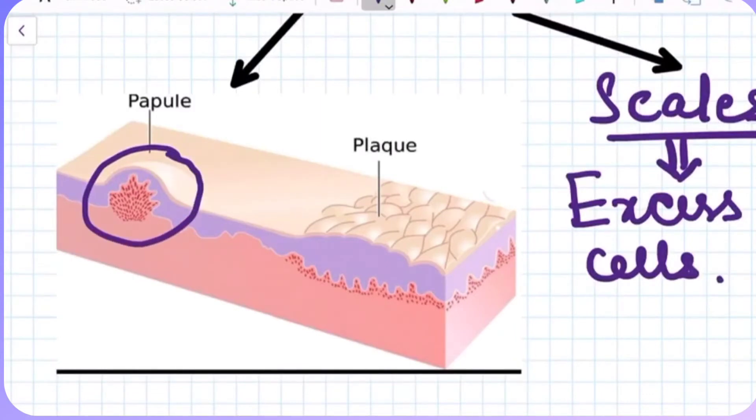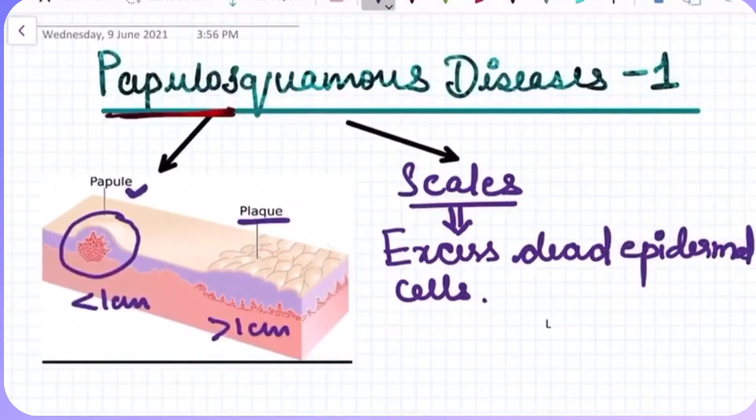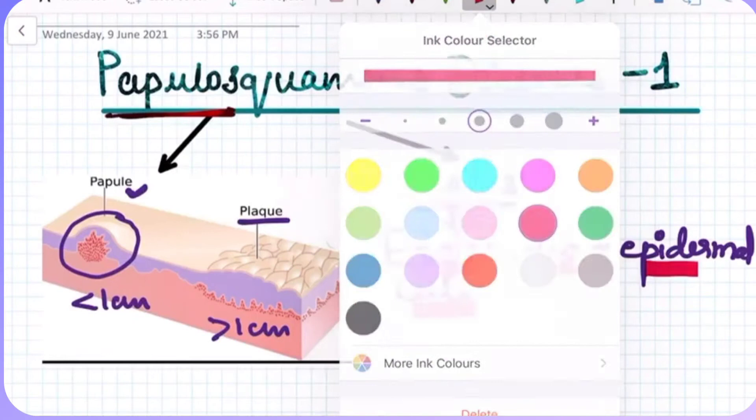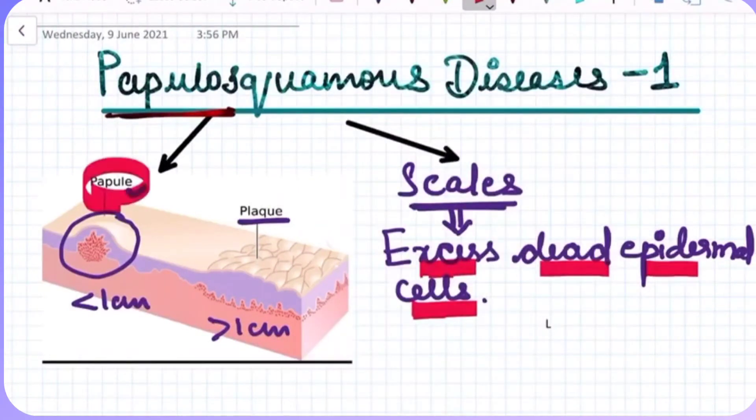This is referred to as a papule, and if it is more than one centimeter, it is called a plaque. Along with that, we have scales. Scales are nothing but excess dead epidermal cells.